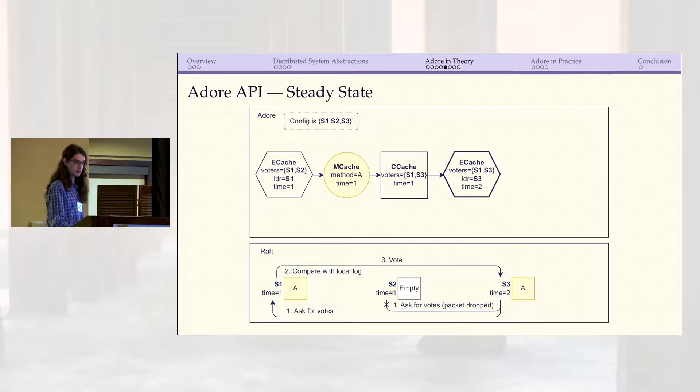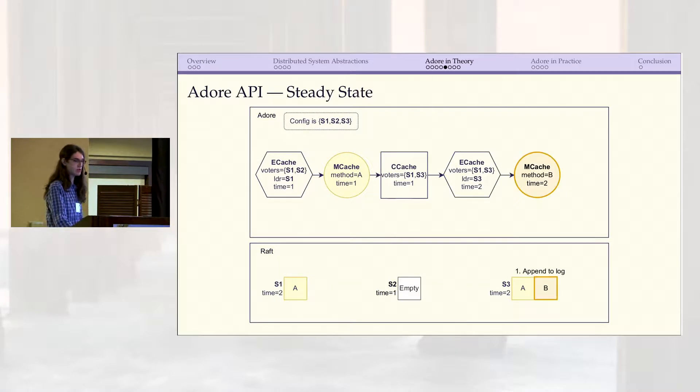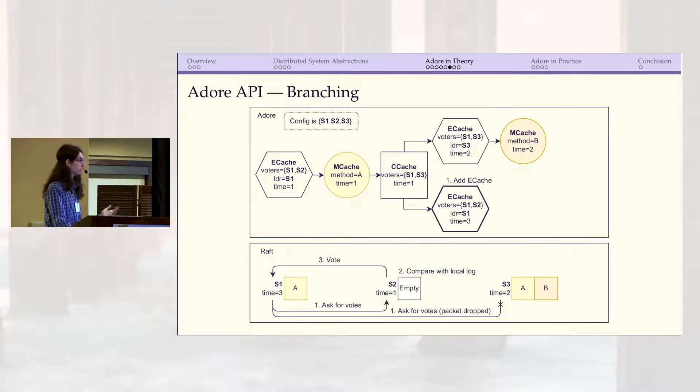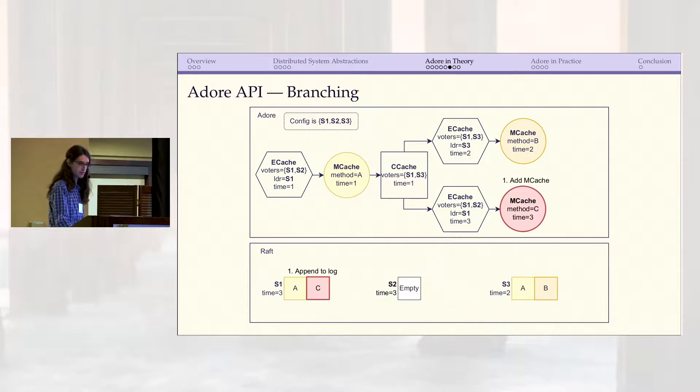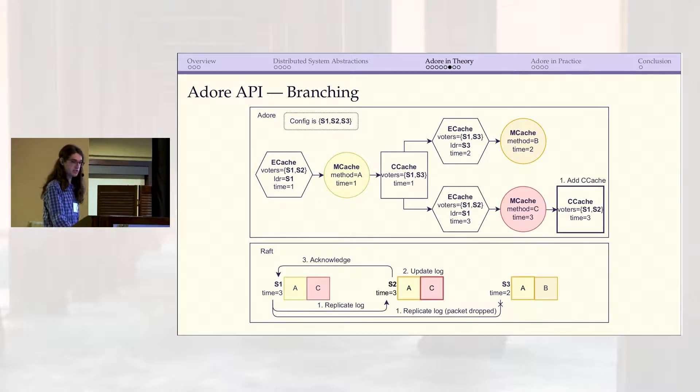Under good conditions, the tree might just continue to grow linearly like this. Another leader could be elected and it can propose more methods and so on. However, things can look a little different if we start to consider failures. If, for example, this second leader S2 fails, then S1 might become the leader again. But note that since method V is not committed yet on the upper branch, S1 is not aware of it. So instead, its E cache follows the last cache that it is aware of, which is the C cache, creating this second branch. S1 can then propose its own methods and may eventually commit it. At this point, the safety property of Adore says that there can never be a C cache placed on the upper branch with method B. By requiring that all C caches appear on just a single path through the tree, we're also requiring that there's a common sequence of M caches that at least the quorum servers agree on.